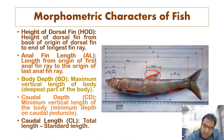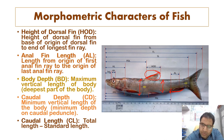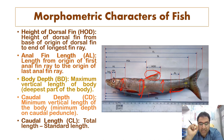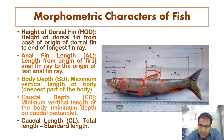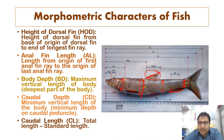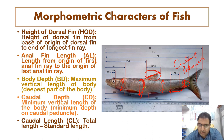Body depth is the maximum vertical length of the body — measured at the deepest part of the body. Not all points along the body have the same depth, so it is taken where the depth is maximum. Caudal depth, also known as caudal peduncle, is the minimum vertical length of the body near the caudal fin — the narrowest point near the tail.